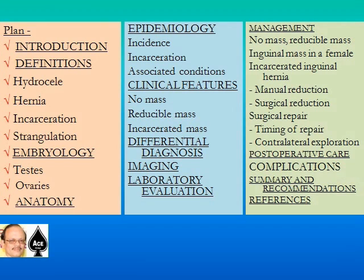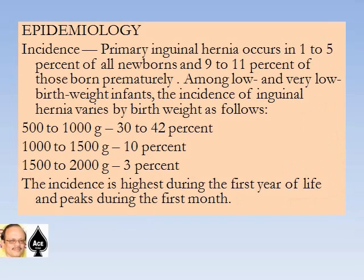In part one we talked about introduction, definition of hydrocele, hernia, incarceration, strangulation, and we were discussing embryology of testes and ovaries and also the anatomy of the various types of hernias. In the second part we shall discuss epidemiology, incidence, incarceration, associated conditions, clinical features, no mass, reducible mass, incarcerated mass, and differential diagnosis, imaging and laboratory evaluation.